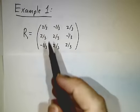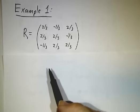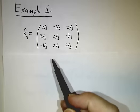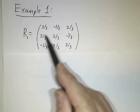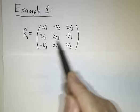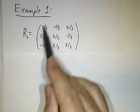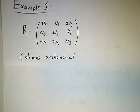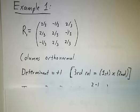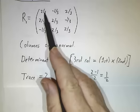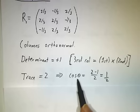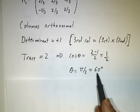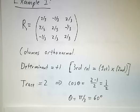So let's look at this example. Here's a matrix where all three columns are orthonormal — they're all permutations of entries with two-thirds and minus one-third. The cross product of the first two columns gives the third, and so on. The determinant is +1, so this is an orthogonal matrix and it must be a rotation. The trace is 2/3 + 2/3 + 2/3 = 2, so cosθ = (2 − 1)/2 = 1/2, which means θ = π/3, or 60 degrees. This is a 60-degree rotation about some axis.